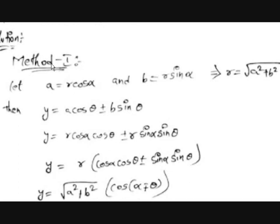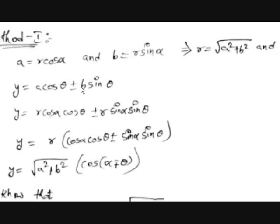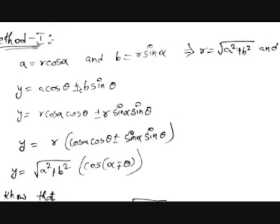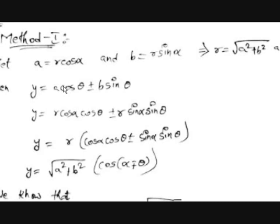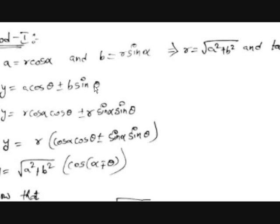Let's discuss the first method using only the trigonometric formula. We have y = a·cosθ ± b·sinθ. We want to write it in another way such that we get only one trigonometric ratio — only cosine or only sine. We will get the form of a constant multiplied by a sine or cosine of some angle.